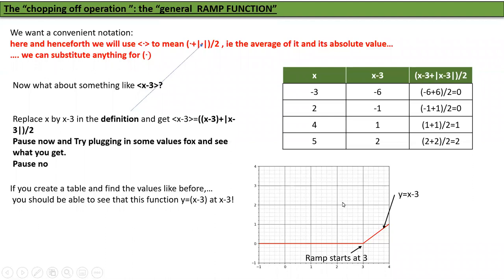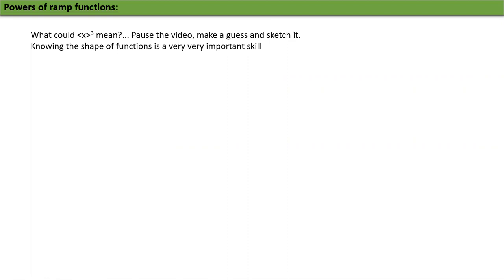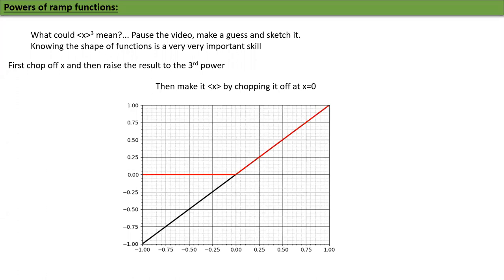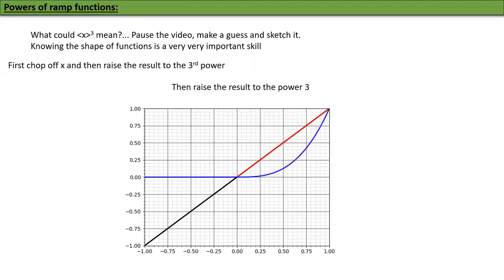That curve is y = ⟨x − 3⟩, which is pretty straightforward. Now let's try something more ambitious: what about ⟨x⟩³? Pause the video, make a guess, and sketch it — knowing the shape of functions is a very important skill. What it means is: first chop off x using angle brackets, then raise the result to the third power. Here is x — chop off the left, it goes to zero — and then raise the red curve to the power three to get the blue curve. You can see the blue curve starts at zero and then rises.